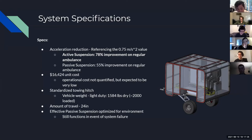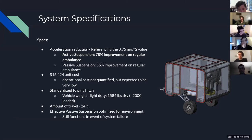The operational cost we did not quantify but expect to be very low since there are not many consumables on this vehicle. We utilize a standardized towing hitch, which makes it very flexible for many different vehicles. The vehicle weight is only 1,500 pounds dry and about 2,000 pounds loaded, meaning it can be pulled by pretty much any towing vehicle. Our amount of travel is 24 inches, which far exceeds any off-road vehicle on the market today.